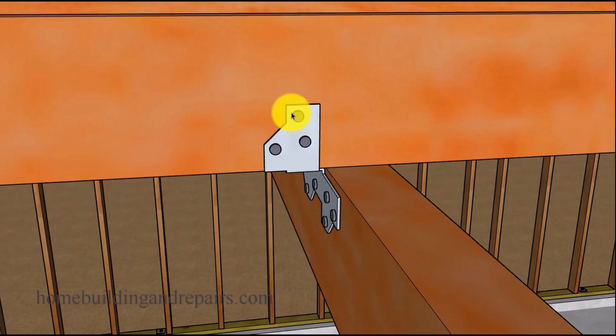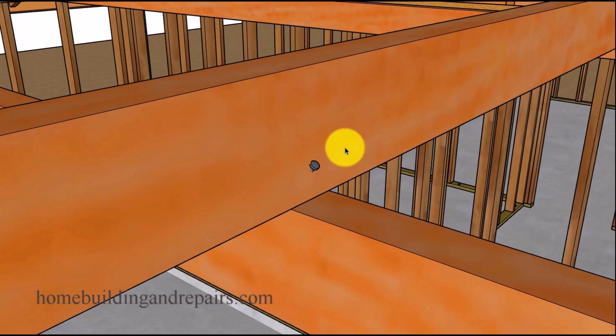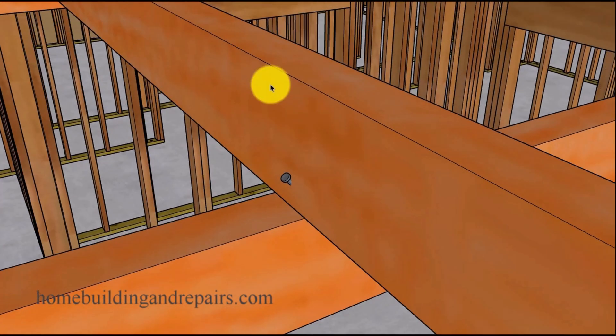This is actually the most common method you're going to find. That would be a carpenter just simply driving a nail, a 16D nail, on each side of the collar tie into the rafter tie. You're probably thinking this isn't going to do much.